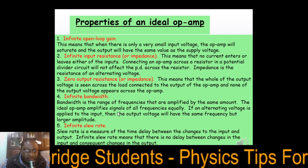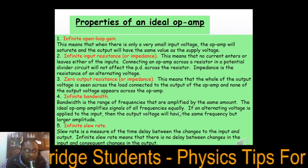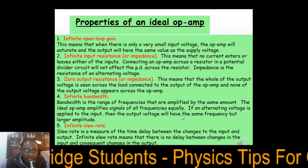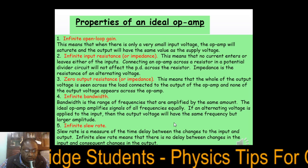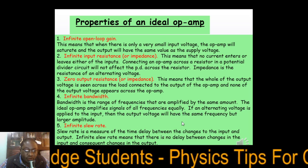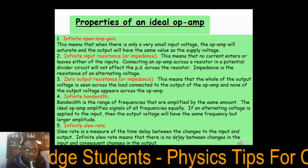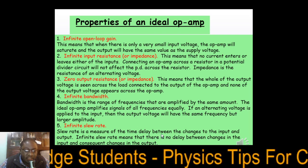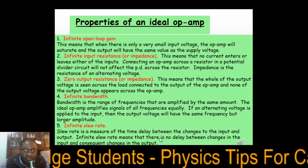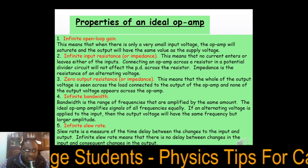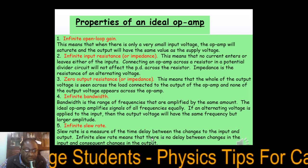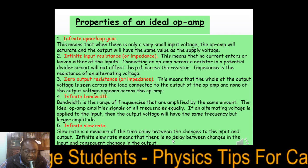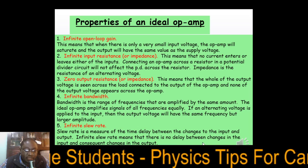Infinite bandwidth: bandwidth is the range of frequencies that are amplified by the same amount. An ideal operational amplifier amplifies signals of all frequencies equally — if an alternating voltage is applied to the input, the output has the same frequency but a larger amplitude. Infinite slew rate: slew rate is the measure of time delay between changes to the input and output. Infinite means there is no delay — as soon as you produce a change in the input, you immediately get an output change.